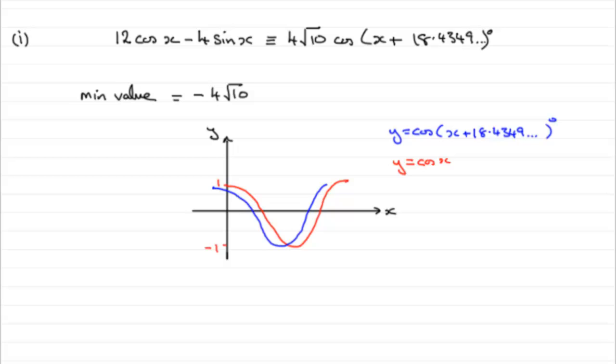So we've got this one going between -1 and 1. But now, when we multiply it by 4√10, we create this new graph, which I'll do in green. 4√10 cos(x + 18.4349°), and so on. Can you guess what that does then? It stretches the graph by a factor of 4√10, parallel to the y-axis.